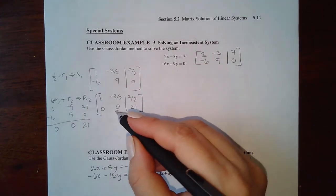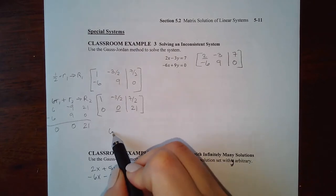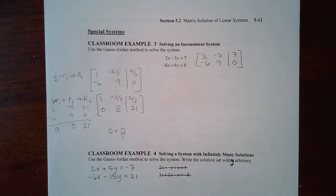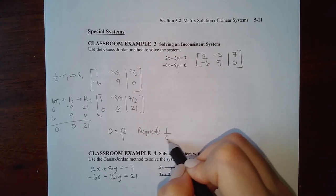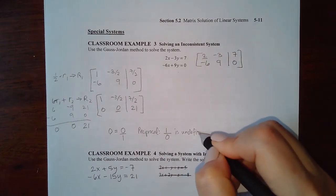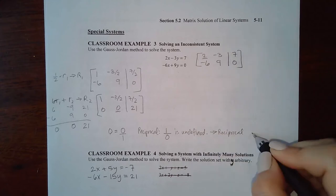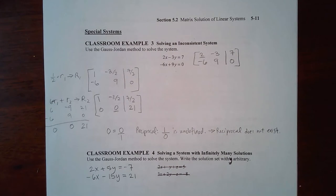The next step would be to turn that zero into a one. The only way to do that is to multiply by its reciprocal. Zero as a fraction is zero over one, so its reciprocal would be one over zero — but you can never divide by zero. One over zero is undefined, which means the reciprocal does not exist. You cannot multiply by a reciprocal that doesn't exist, so it's impossible to continue.